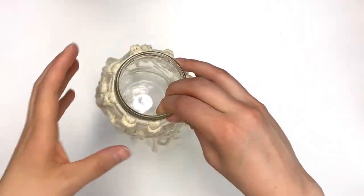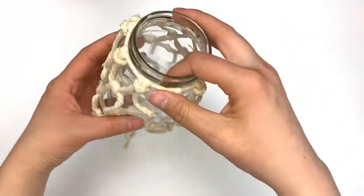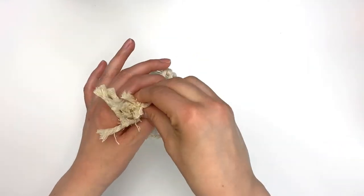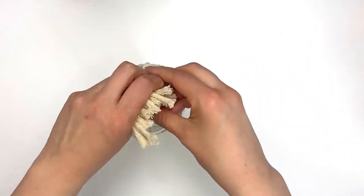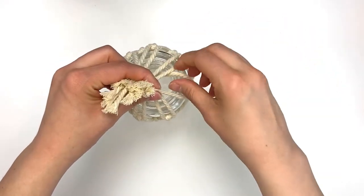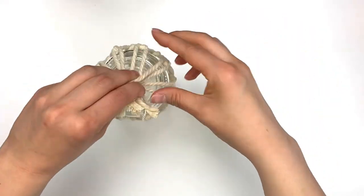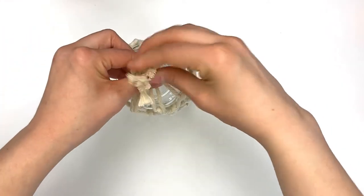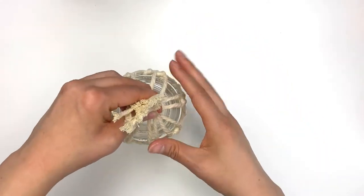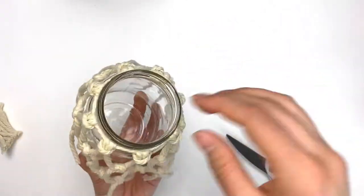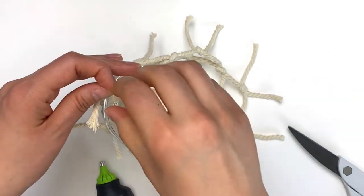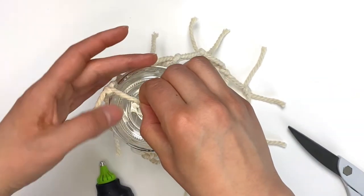When you're done with all of your knots, it should look something like this. And then to finish it off, you're going to gather all of the excess macrame at the bottom of the jar and then pull a little bit, gather them as best as you can. And then you're going to take some scissors and cut as close to the jar as you can, and then you're going to glue each of the little strands one by one to the bottom of the jar.